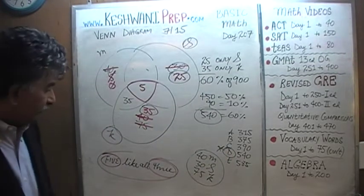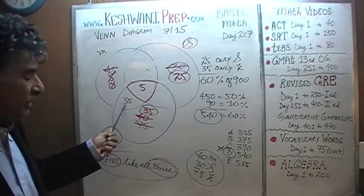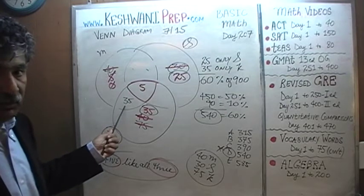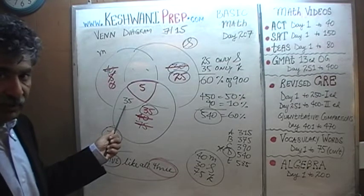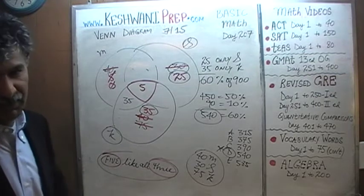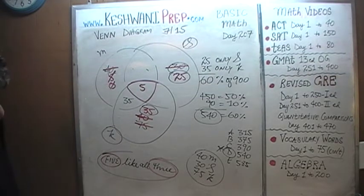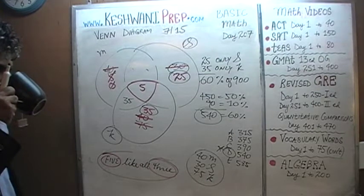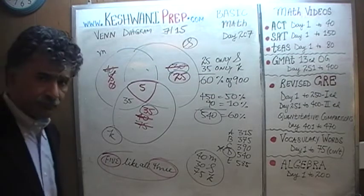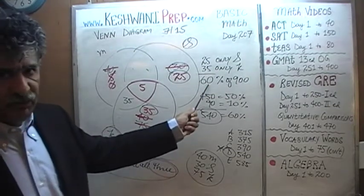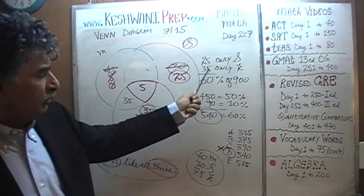Now, just to make it interesting, we are going to redo this problem. Instead of putting all 35 people who like exactly two activities in one place, let's distribute them more evenly. When we do that, we'll see that we still get the same answer — 60% of people engaged in exactly one activity — though the distribution will be different.